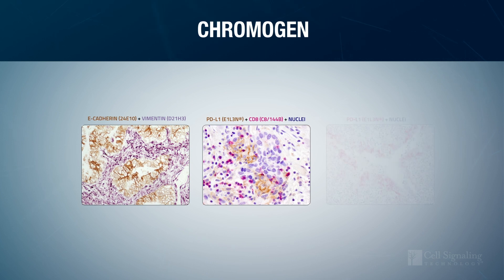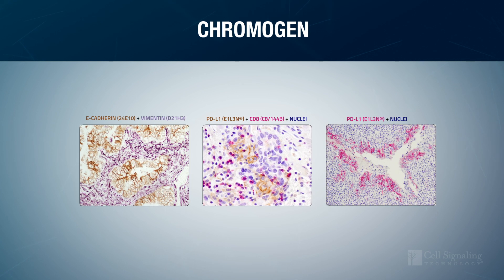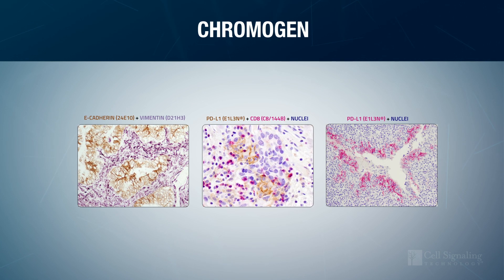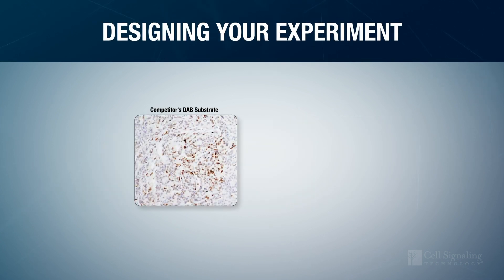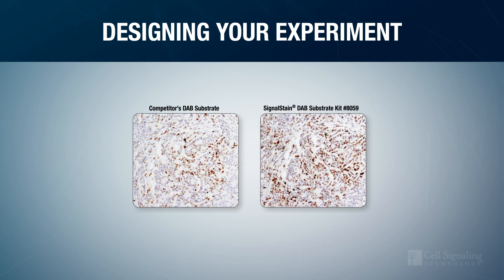Several chromogenic substrates are available and they produce a variety of colors with varying intensity. In designing your experiment, choose a chromogen that produces a color with appropriate contrast to your counterstain, and of a high enough intensity to reveal the antigen you are trying to detect.